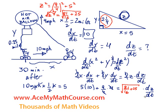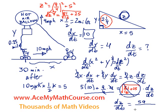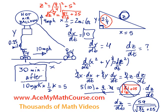All we need to do is divide both sides by z to isolate dz/dt. So dz/dt = (5×10 + 9) / √(81/16 + 25) = 59 / √(81/16 + 25). This is the rate at which the distance between the hot air balloon and the bicycle is increasing 30 minutes after the bicycle was directly below the hot air balloon.